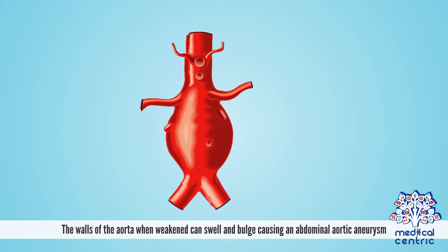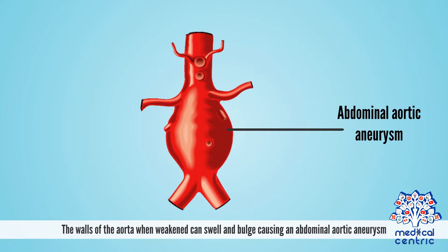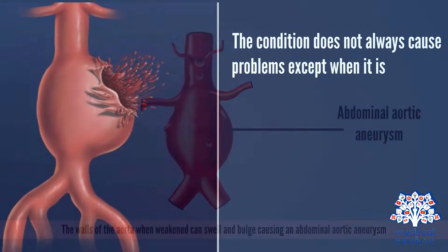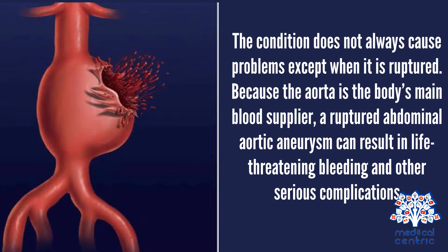The walls of the aorta, when weakened, can swell and bulge, causing an abdominal aortic aneurysm. The condition does not always cause problems, except when it is ruptured. Because the aorta is the body's main blood supplier, a ruptured abdominal aortic aneurysm can result in life-threatening bleeding and other serious complications.